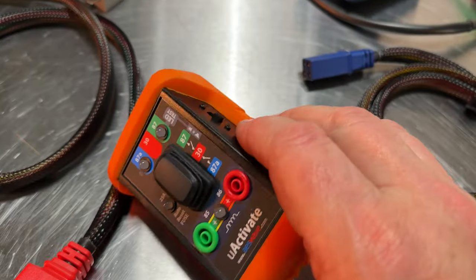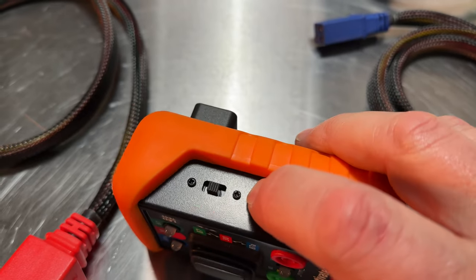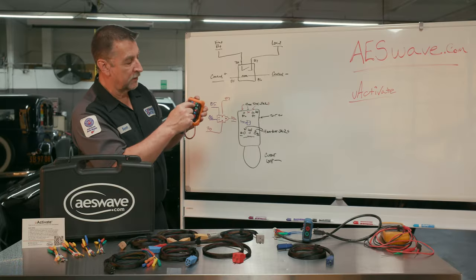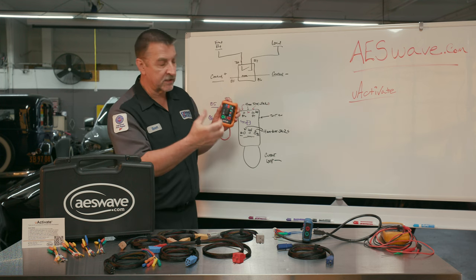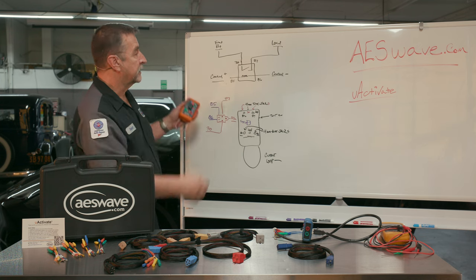When you switch this little test light switch over, that's going to close this circuit and allow you to close the circuit across the bulb. The bulb is working as a slight load. If that turns on, then you've got a complete circuit.